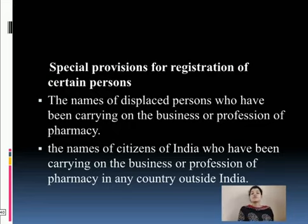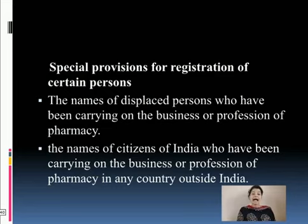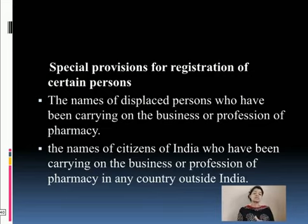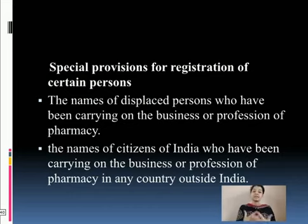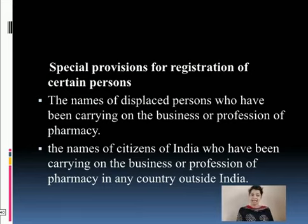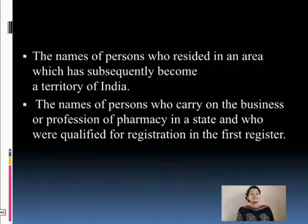There are certain special provisions for registration of certain groups of people. The register holds certain space for the names of displaced people who have been carrying on the business or profession of pharmacy as their principal means of livelihood from a date prior to the fourth day of March 1948, and who satisfy the conditions for registration. The register also holds certain place for citizens of India who have been carrying on the business or profession of pharmacy in any country outside India and who satisfy the conditions laid down for registration as a pharmacist.